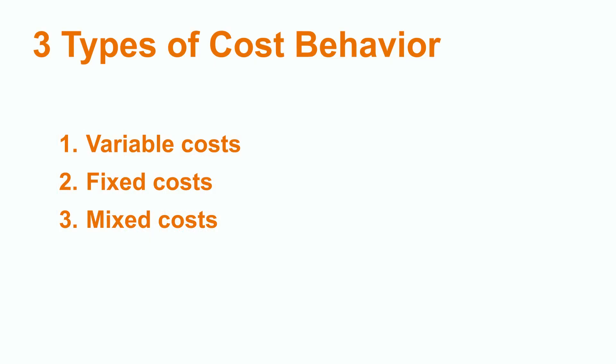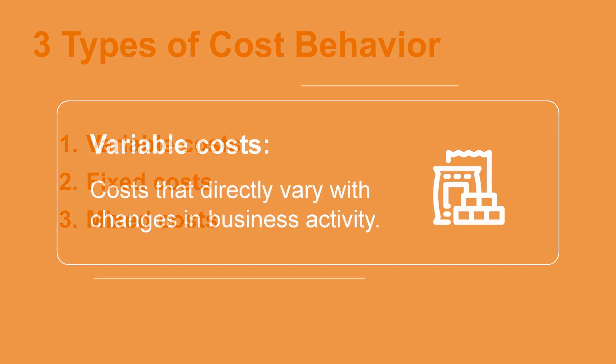There are three basic types of cost behavior: number one, variable cost; number two, fixed cost; and number three, mixed cost.